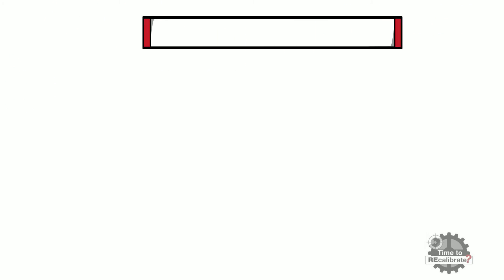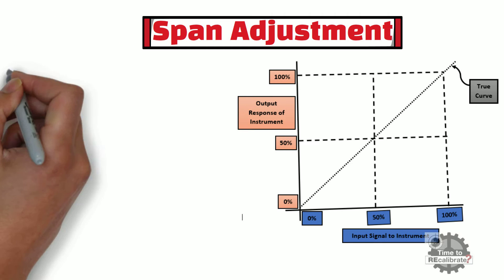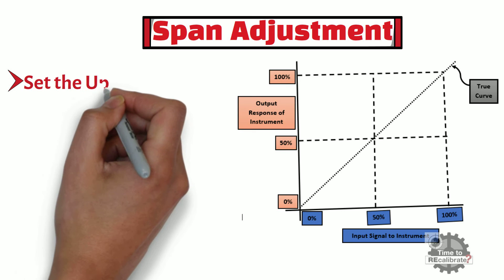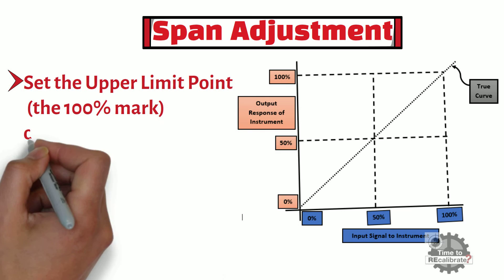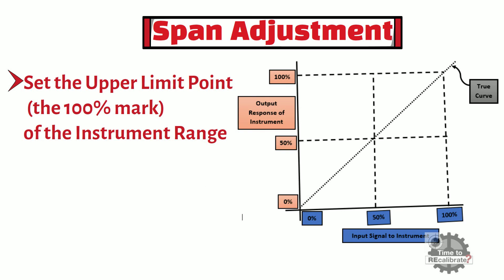Let's understand what is span adjustment. Span adjustment is used to set the upper limit point, or 100% mark of the instrument range. In order to set upper limit point, 100% of input signal is given to instrument, and output of instrument is adjusted to 100%.